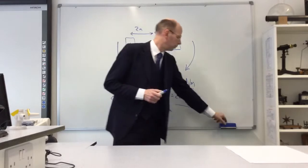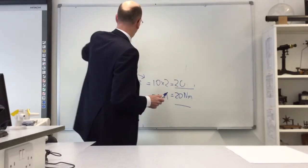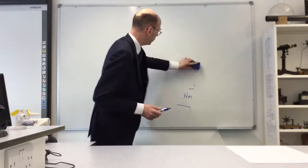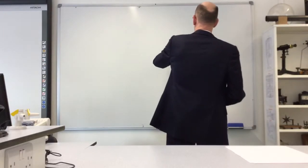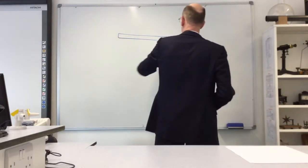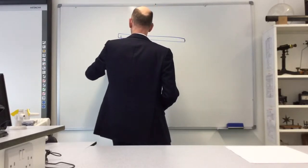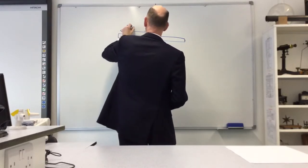We can use this principle to work out unknown forces or distances. Let's suppose I've got a beam with a pivot in the middle, and on this side I've got 30 newtons at a distance of 2 meters.